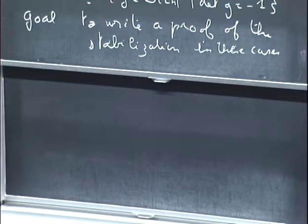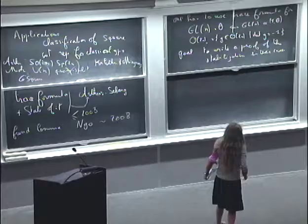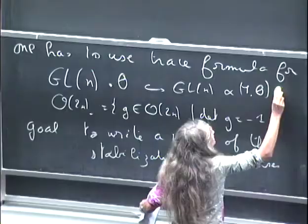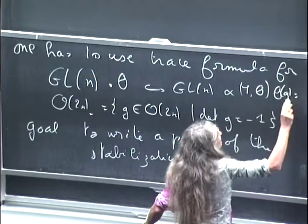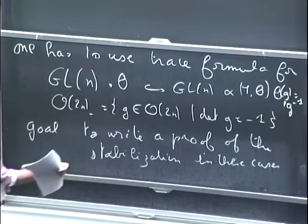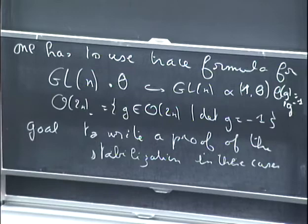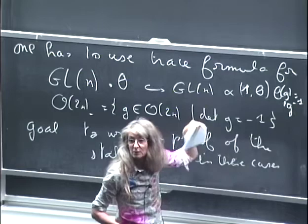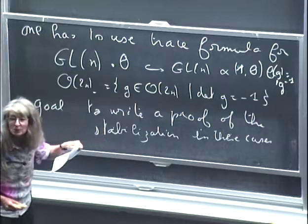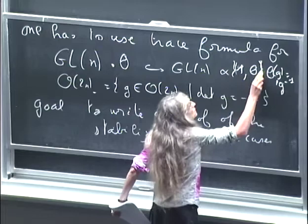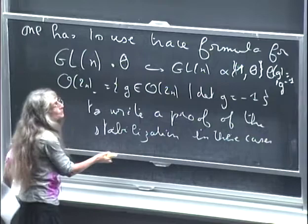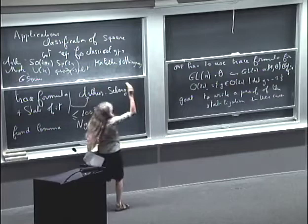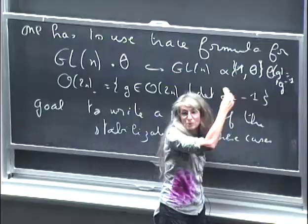We have decided with some friends and colleagues that the goal is to write a proof. For example, after GL(N), you have a non-connected component inside this group. This group is a semi-direct product of the group of two elements with GL(N). This group gives the first case. We have to take an extension and put a bar here to have the unitary group.